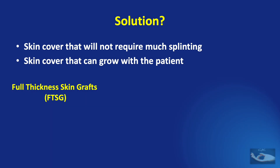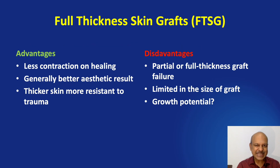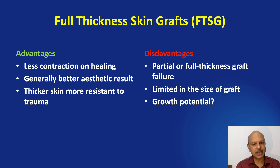We can apply a full thickness skin graft, or an integrated dermal regeneration template such as Integra, or a flap cover. Let us consider these three options. The advantages of the full thickness skin graft: there is less contraction on healing, better aesthetic result, and thicker skin which is more resistant to trauma. The disadvantages are it is possible that there may be a little bit of failure of the graft, a limitation in the size of the graft, and the question of growth potential.